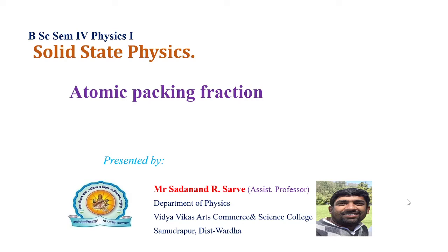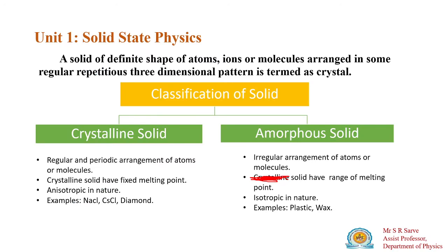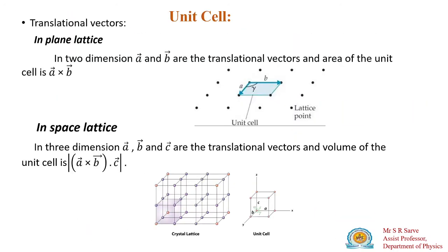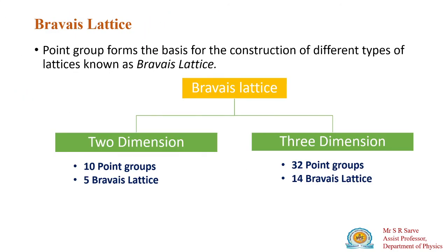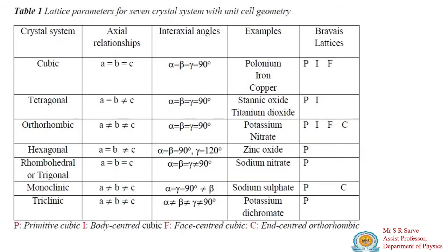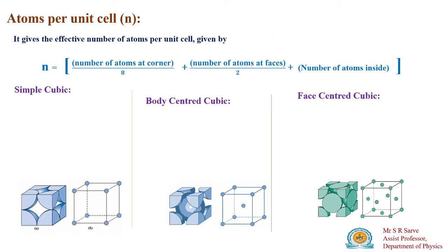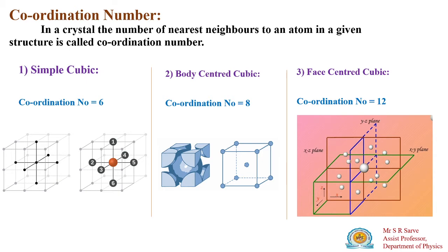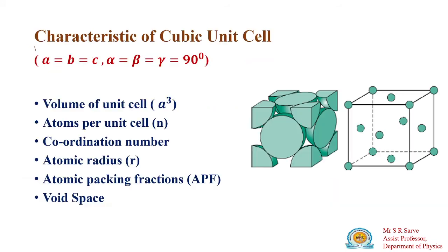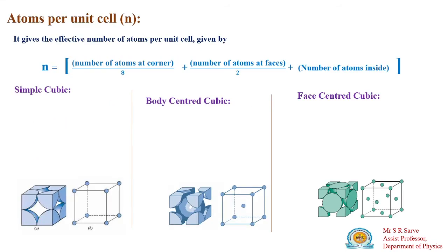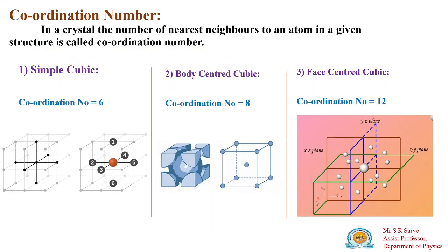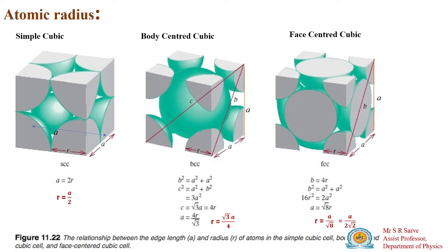Good afternoon students. Today we are going to learn about atomic packing fraction. In a previous lecture we have learned about solid crystal structure, unit cell, symmetry operations, Bravais lattice, two-dimensional and three-dimensional, and parameters of the unit cell — including atom volume of unit cell, atoms per unit cell, coordination number, and atomic radius.